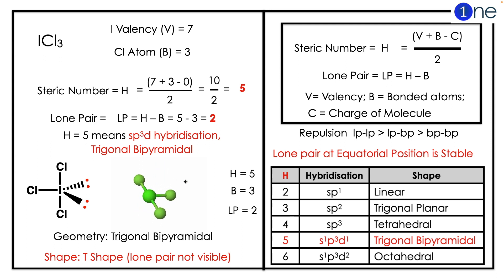The lone pair is not visible, meaning you have perfect T structure. You can understand easily by the animation. So the shape of ICl3 is T-shape.